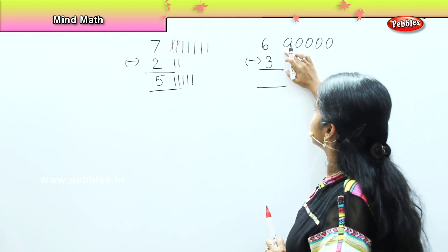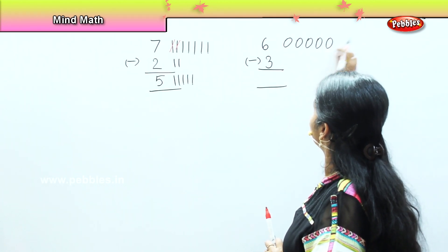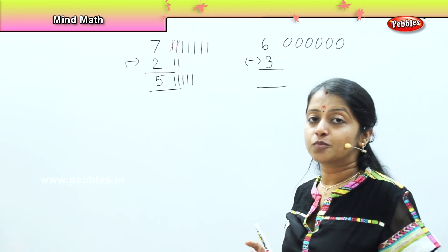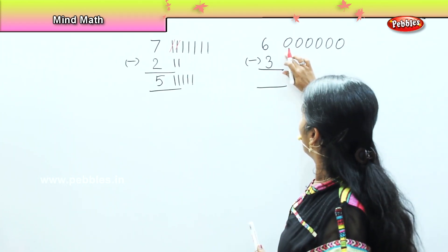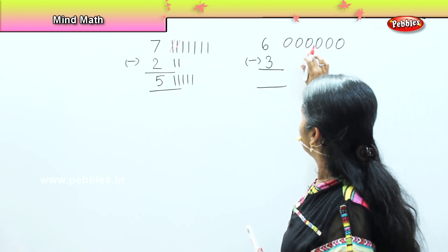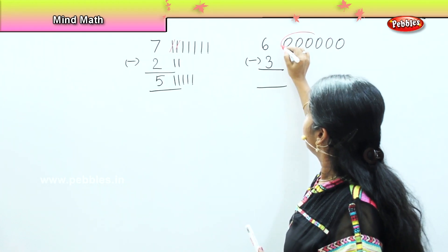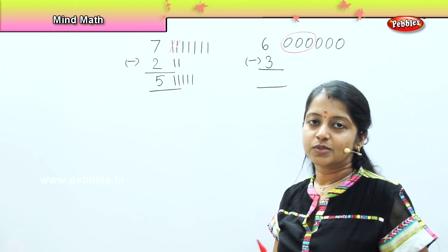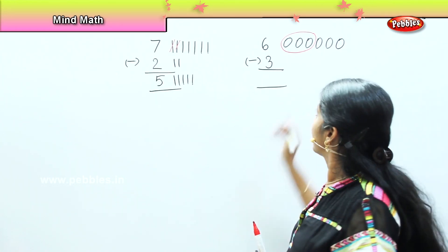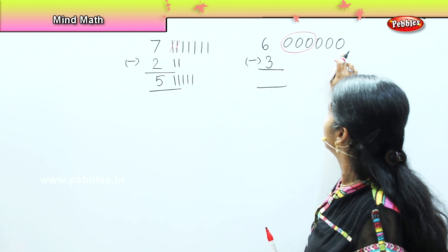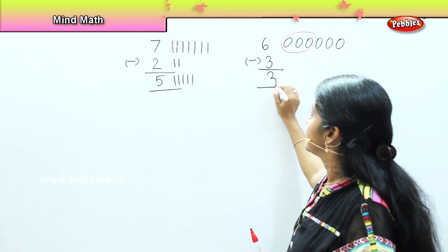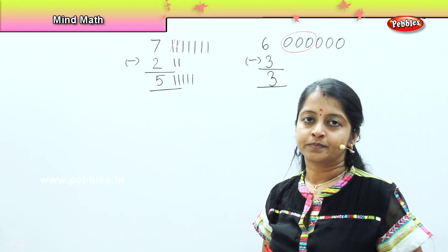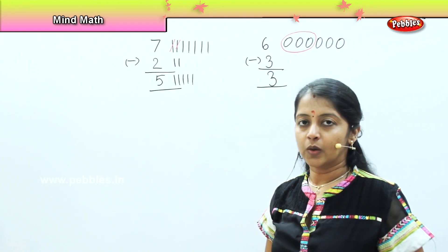We will draw six eggs: one, two, three, four, five, and six. Now how many eggs broke? Three — one, two, and three. I will circle these three. What is the balance of eggs remaining with Money? It is one, two, three. So Money has three eggs remaining with him.